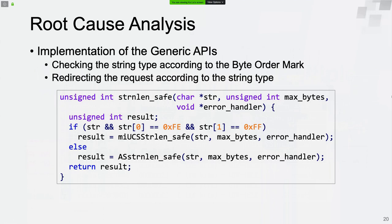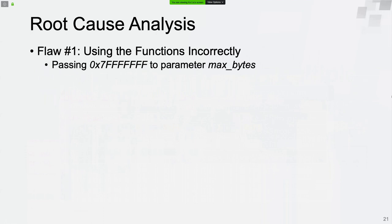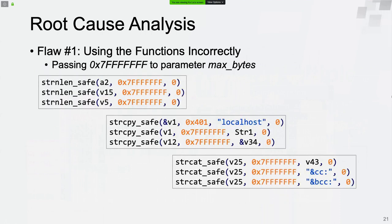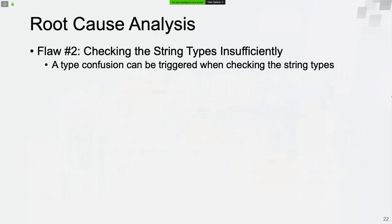FE and FF are the bytes of the byte order mark in big-endian format. The request will be redirected to functions according to the string's type. So what are the problems here? There are two flaws. The first is that the functions are used incorrectly — the value of the second parameter was set to 0x7FFFFF in most cases, leading to security problems. The second flaw is that checking string types according to the byte order mark is insufficient. A type confusion can be triggered easily when checking the string types.